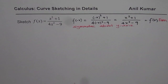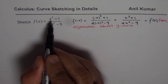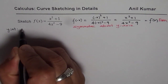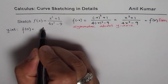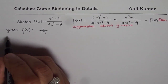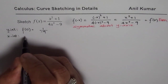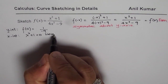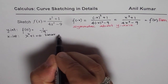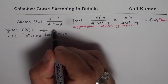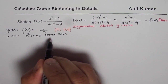Let us begin with the other important things in sequence. First we should look for x and y intercepts. If I substitute x = 0, I get f(0) which is the y intercept. Substituting 0 for x gives 1 over -9. So that is the y intercept. For the x intercept, the numerator should be 0, that is x² + 1 = 0. Well, it is never 0, so there is no x intercept. We do have a y intercept at (0, -1/9), but there is no x intercept.